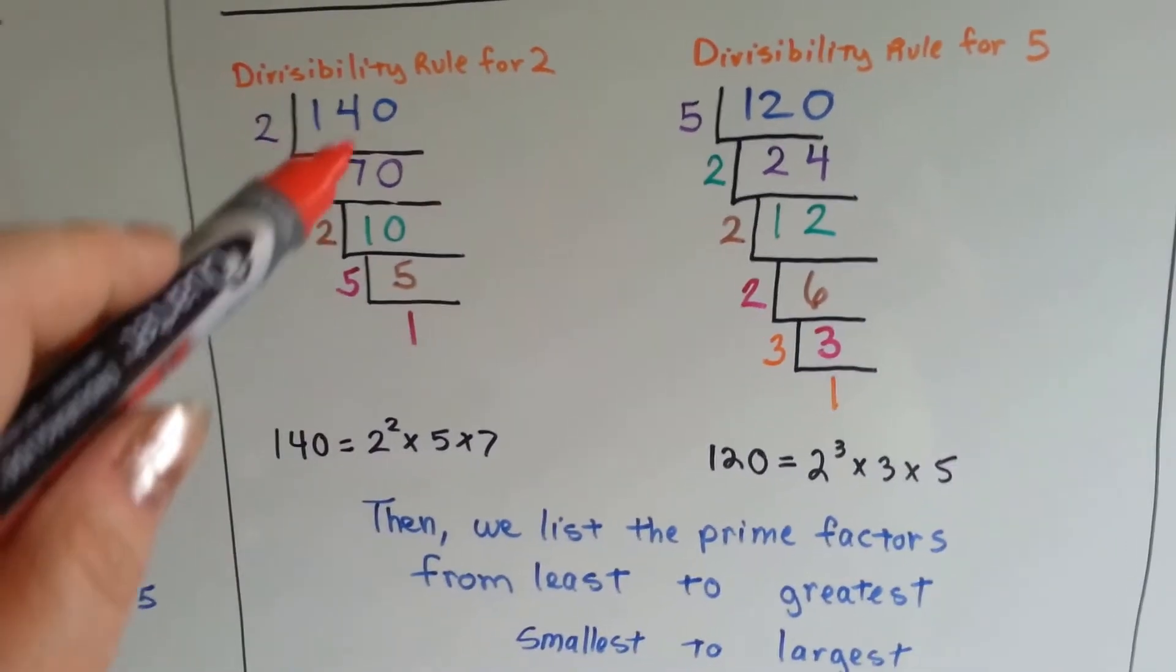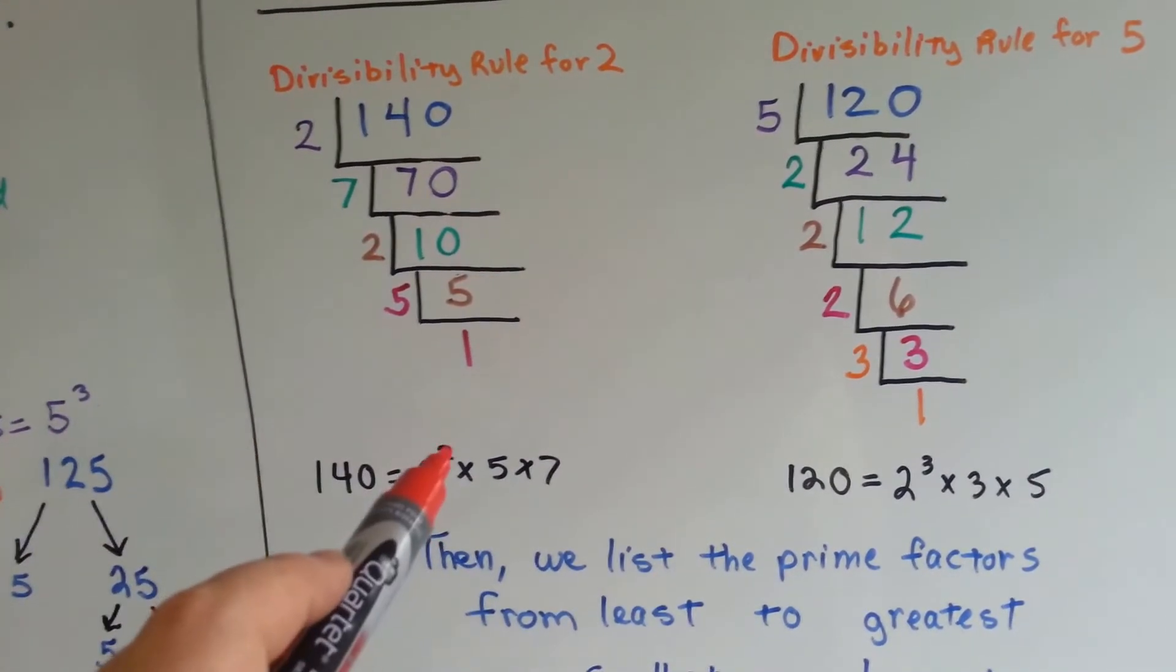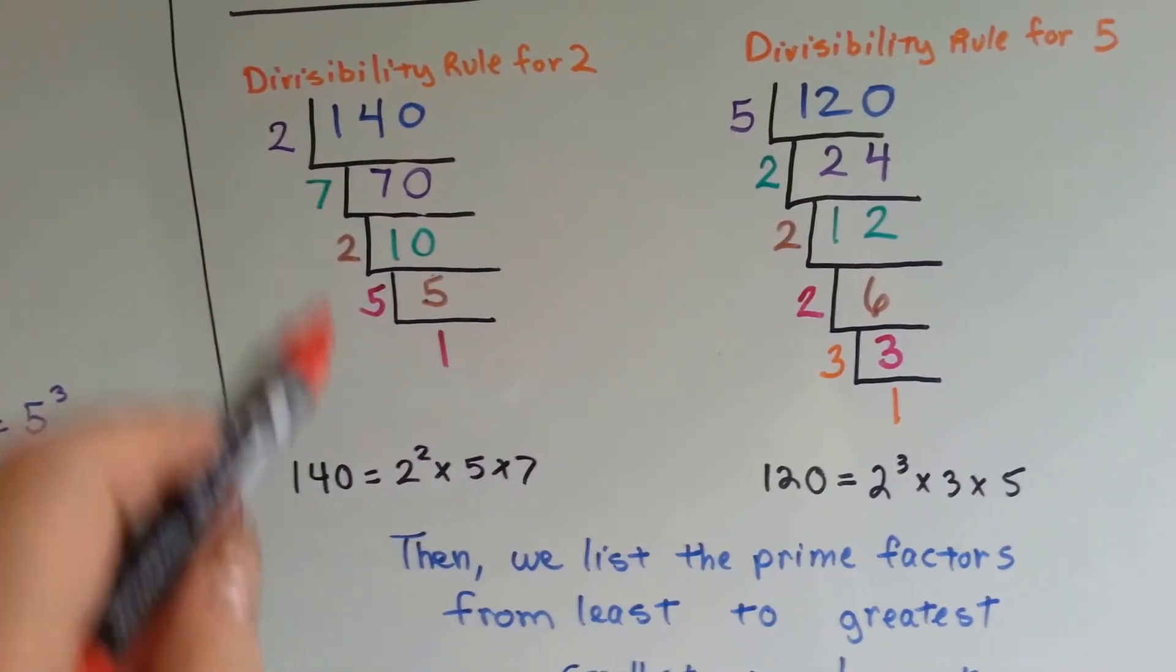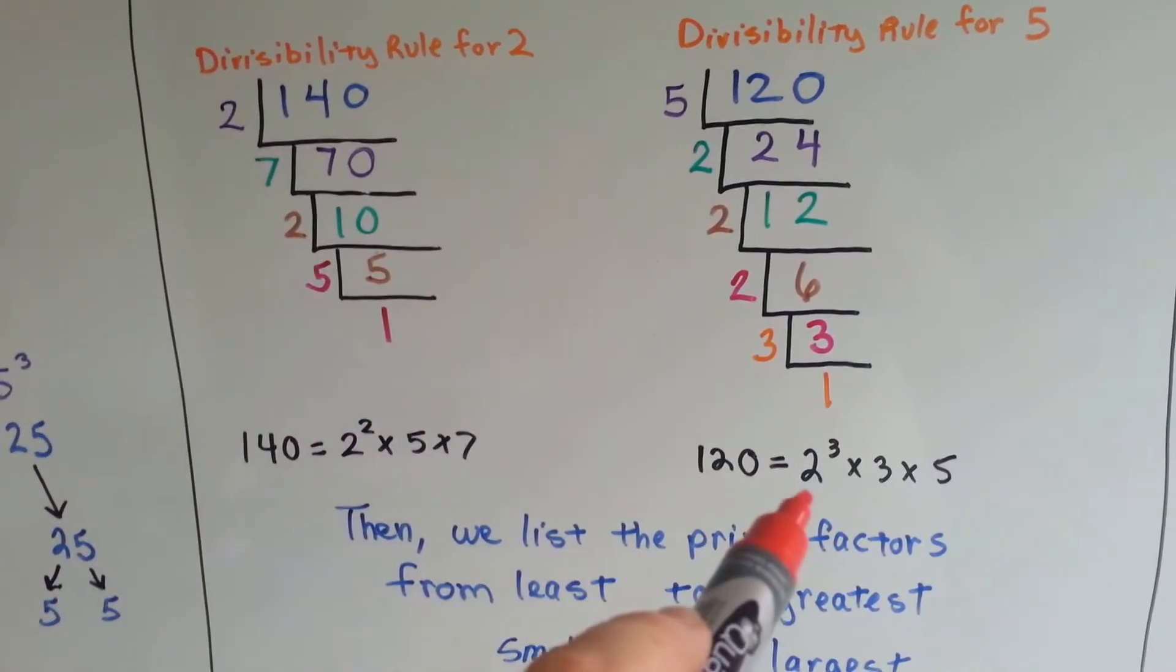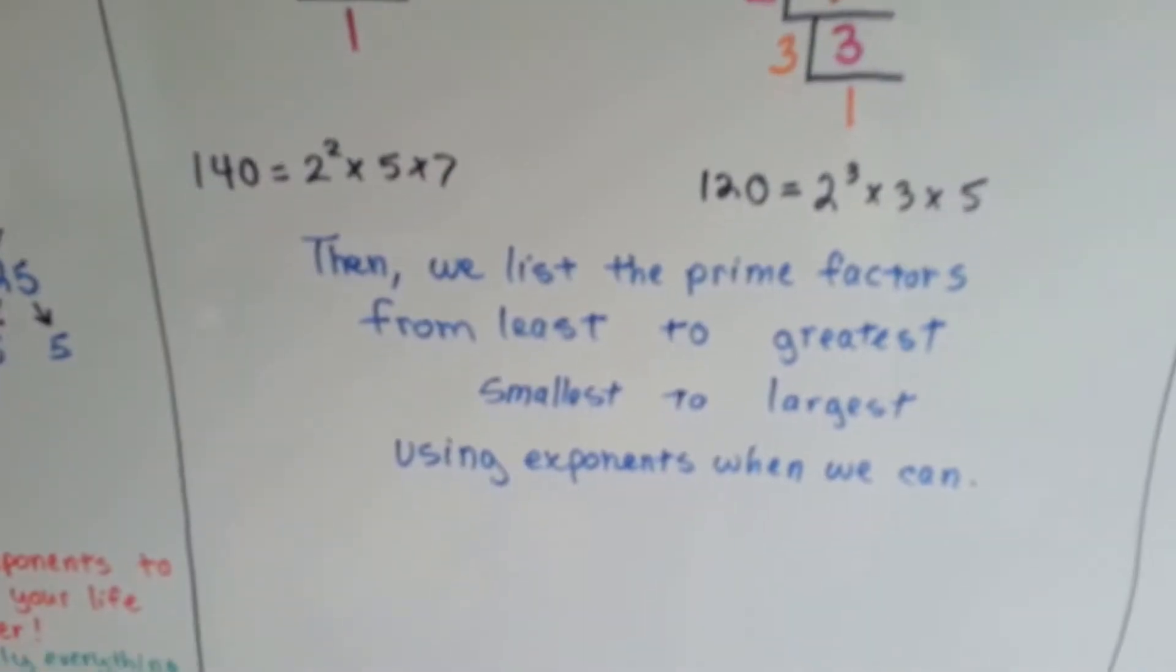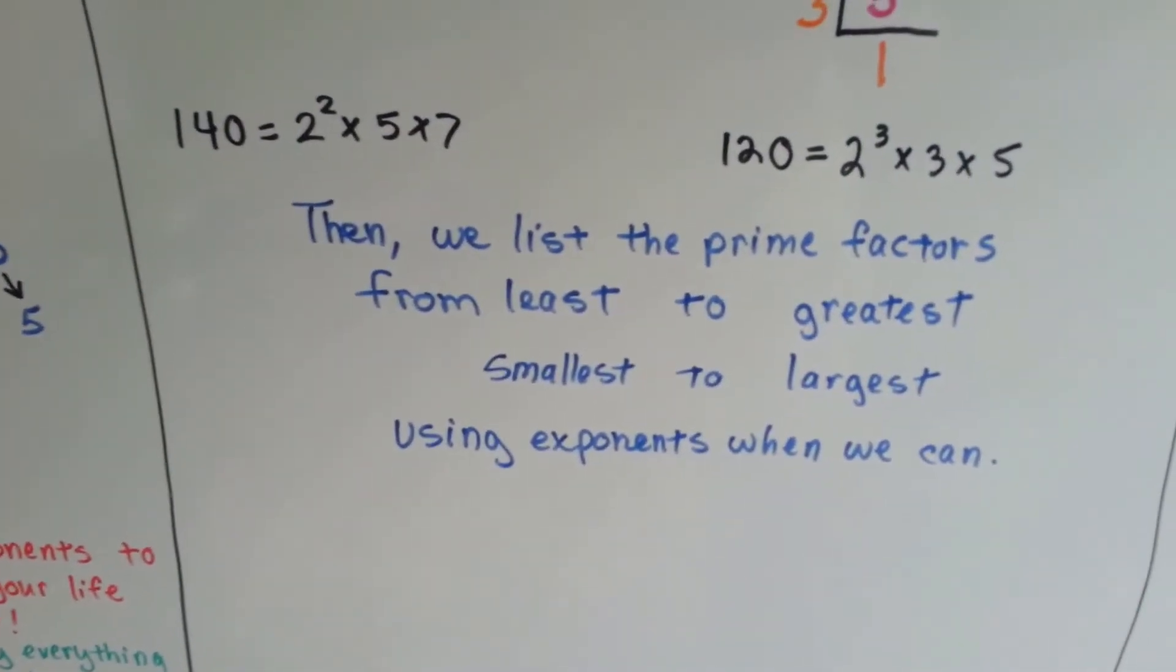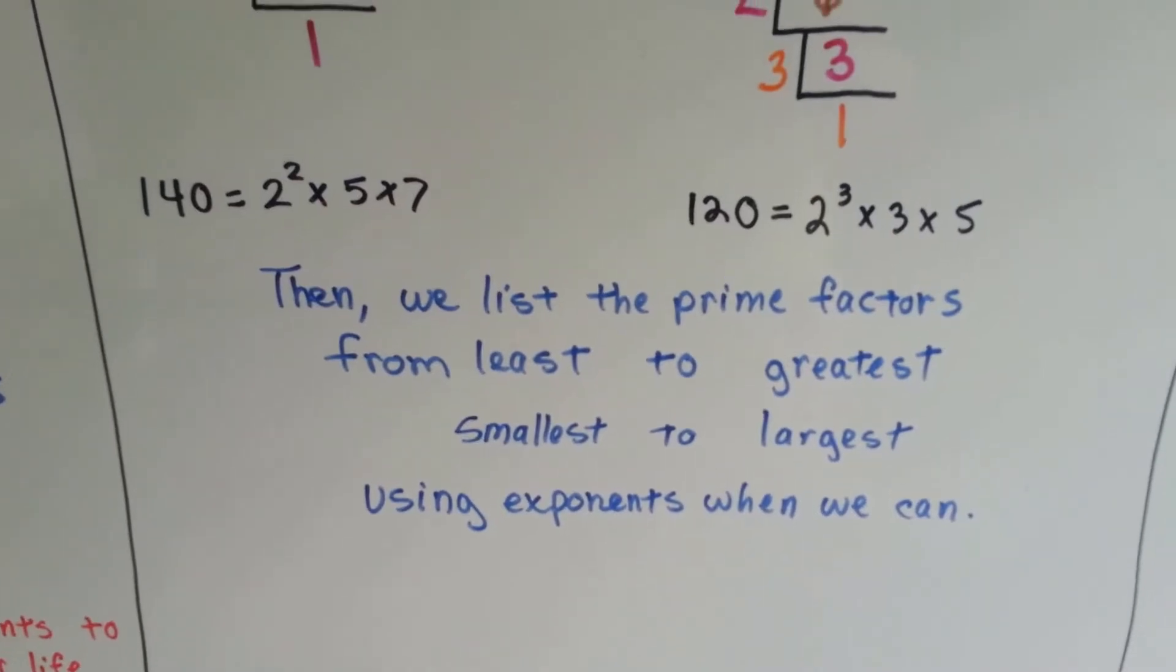So, the prime factorization for the 140 turned out to be 2 to the second power, a 5 and a 7. For the 120, we've got 2 to the third power, and there's a 3 and a 5. So, what we're doing is we're listing the prime factors from least to greatest, from smallest to largest, and we use exponents when we can. That's not hard, is it?